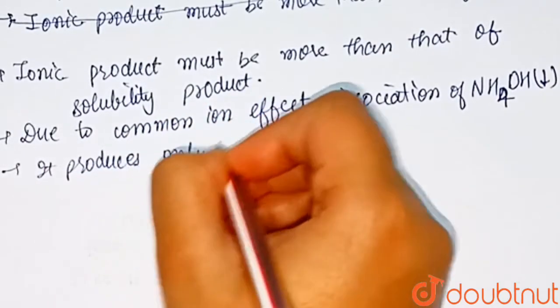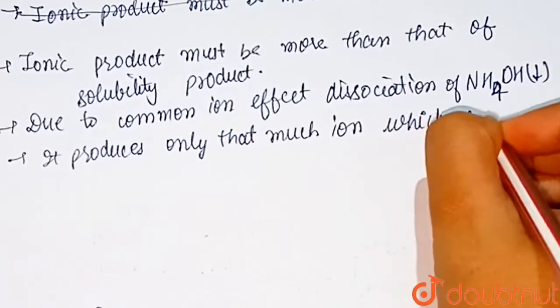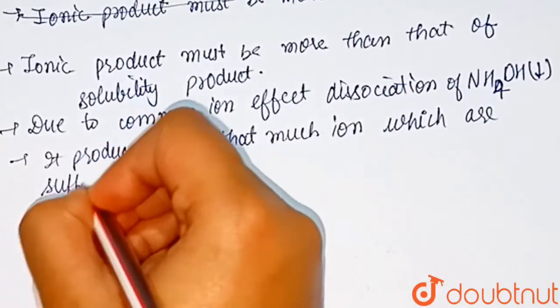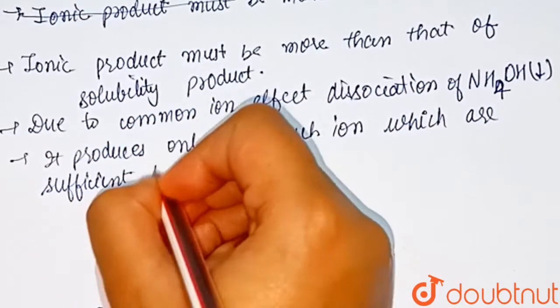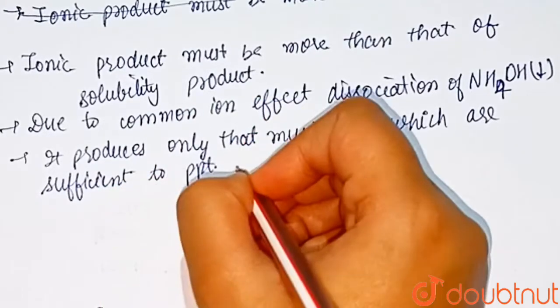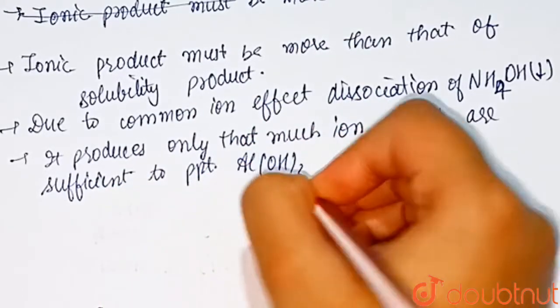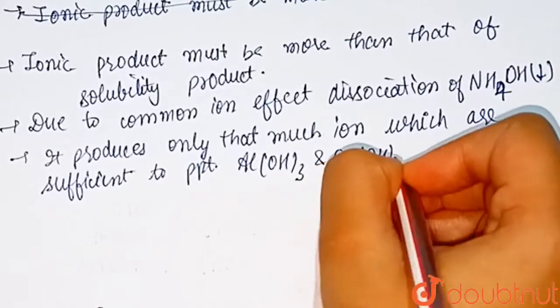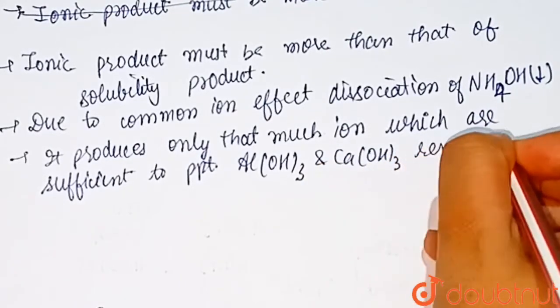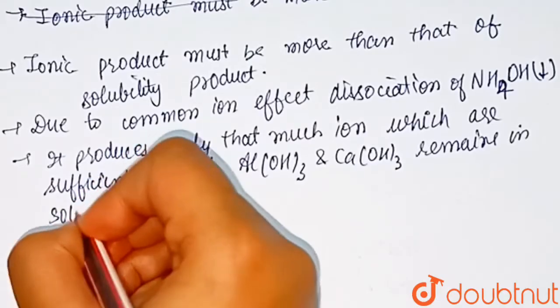only that much ion which are sufficient to precipitate aluminium hydroxide and calcium hydroxide. That much ionic hydroxide remains in solution.